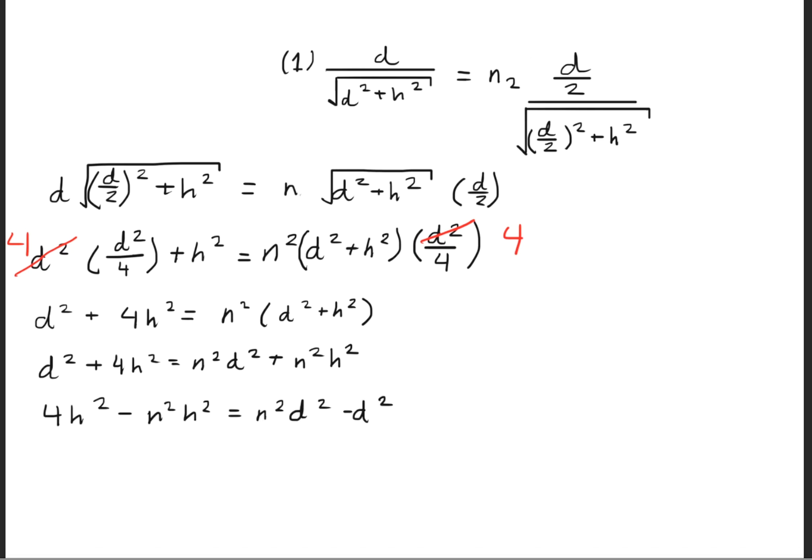What we're going to do now is we're going to move over some of the terms so that we can go ahead and factor out the h squares and the d squares. This will give us h over d is equal to the square root of n squared minus 1 divided by 4 minus n squared. So we've gone ahead and successfully proven the equation that part A was asking for.